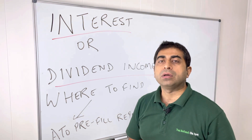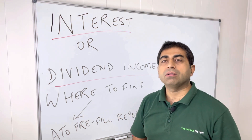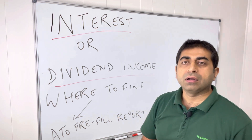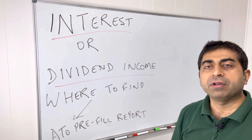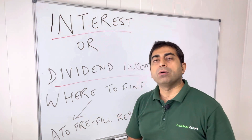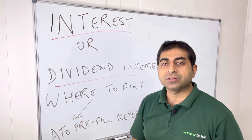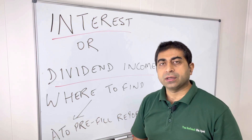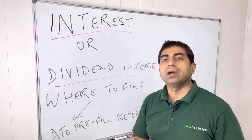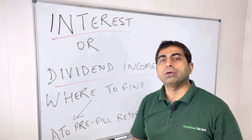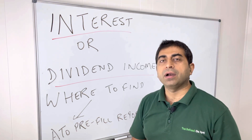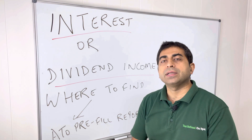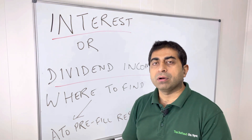They don't have to go to the bank or contact the company to find out. It's all in the ATO Prefill report. The ATO Prefill report is a report created by the tax office which shows how much your interest income, dividend income, and employment income are for the last financial year — all of those things are covered in the ATO Prefill report.